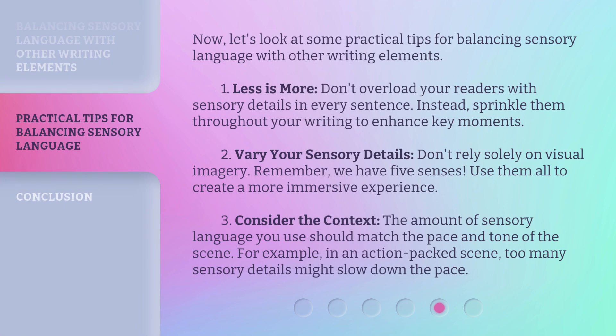Now let's look at some practical tips for balancing sensory language with other writing elements. First, less is more — don't overload your readers with sensory details in every sentence. Instead, sprinkle them throughout your writing to enhance key moments. Second, vary your sensory details — don't rely solely on visual imagery. Remember, we have five senses. Use them all to create a more immersive experience.